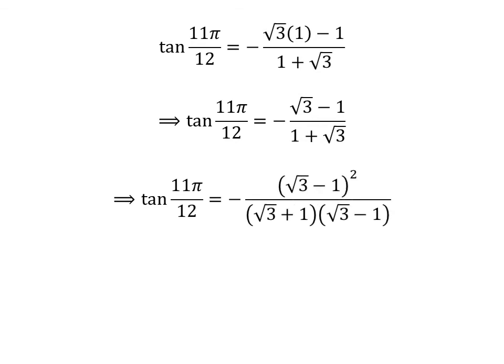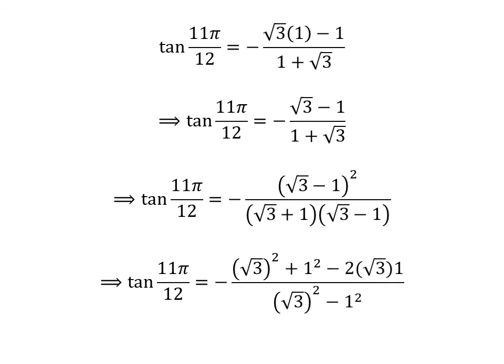Let us rationalize the fraction, as multiplying the numerator and the denominator by a common factor does not change the value of the fraction. So, let us multiply the numerator and the denominator by square root of 3 minus 1. We get tangent of 11 times pi upon 12 is equal to minus of square of square root of 3 minus 1 upon square root of 3 plus 1 times square root of 3 minus 1. Let us expand square of square root of 3 minus 1: in the numerator we have square of square root of 3 plus square of 1 minus 2 times square root of 3 times 1, and in the denominator, square root of 3 plus 1 times square root of 3 minus 1 is equal to square of square root of 3 minus square of 1.